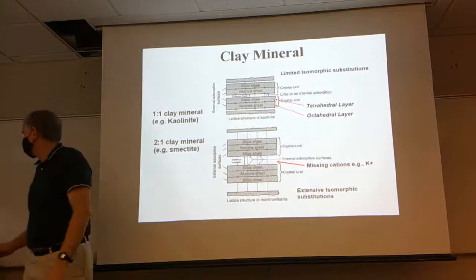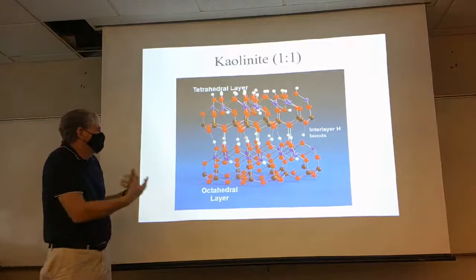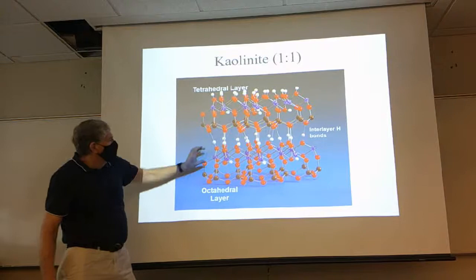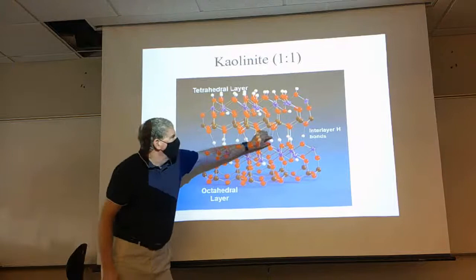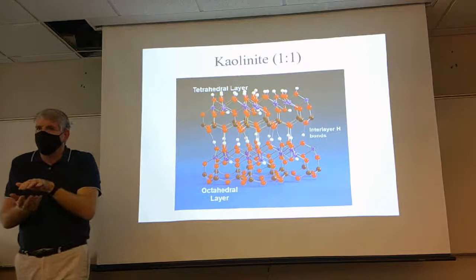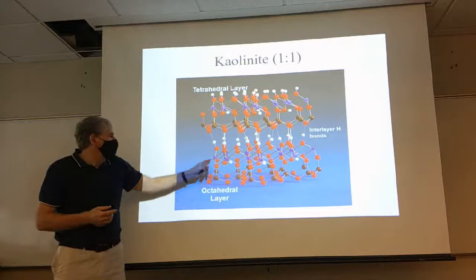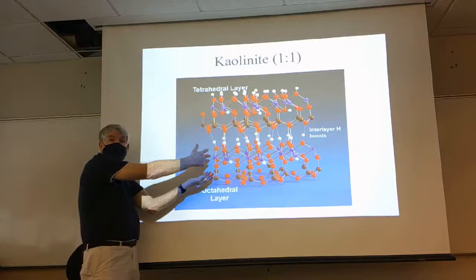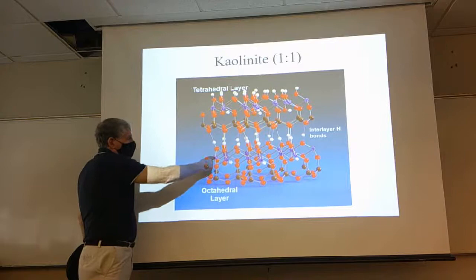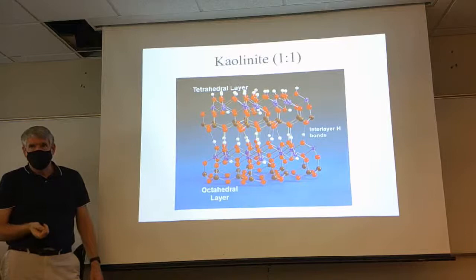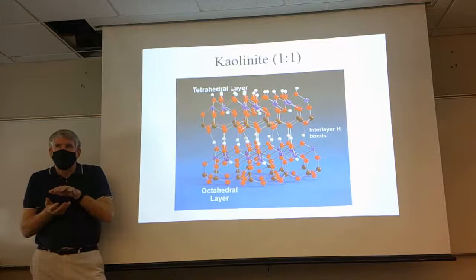With kaolinite, the negative charges are only out on the ends of the clay — caused by aluminum-for-silica substitution in the tetrahedral layer and magnesium substitution in the octahedral layer — but we can't do anything in the middle. So kaolinites aren't very reactive. The other major group is the two-to-one minerals — these would be things referred to as smectites, with montmorillonite as a type — where we have a tetrahedral layer, octahedral layer, tetrahedral layer sandwiched together.